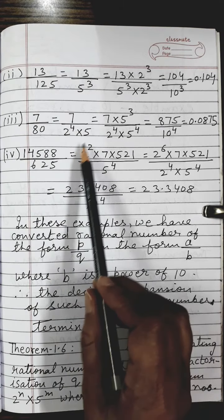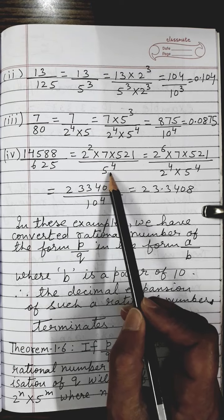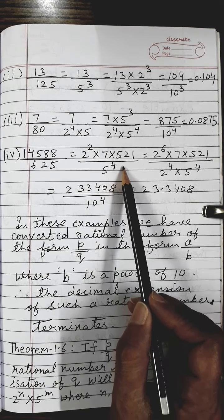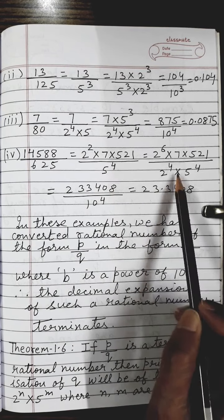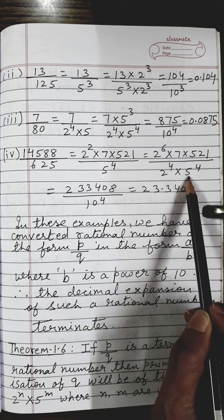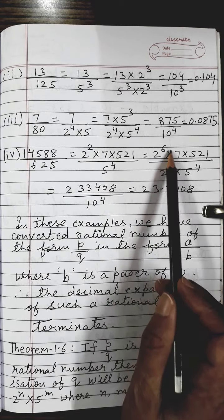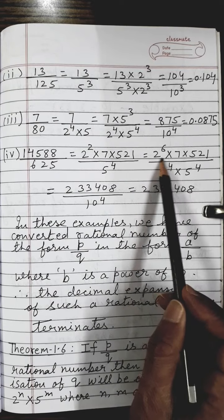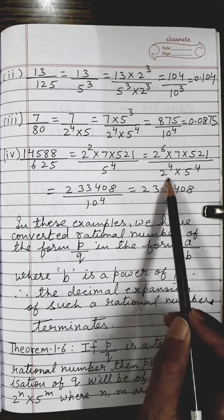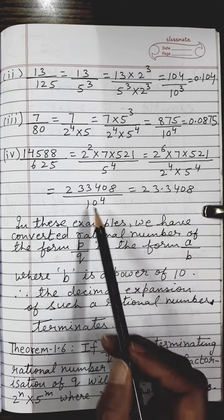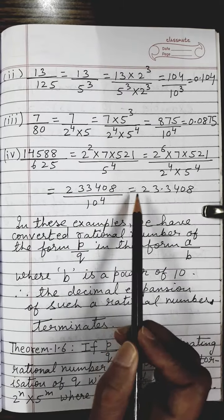Another example: 14588 upon 625. The factors of 625 in the denominator give 5 to the power 4. Since we have 5 factors but need 2s, I will multiply the denominator by 2 to the power 4, and the numerator also by 2 to the power 4. In the denominator, applying exponent rules with different bases but same powers, I can write it as 10 to the power 4. There are 4 zeros in the denominator. So I simply shift the decimal 4 digits from right towards left.